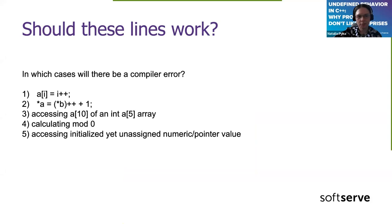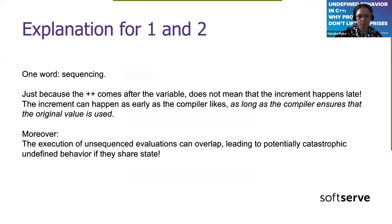Regarding the first two cases — using a variable as an index and then doing post-incrementation — they may seem like completely legit code. But it's connected with the term of sequencing, and it's absolutely up to the compiler and your optimization flags when it happens. Relying on accessing a variable and then changing its value at a time that's up to the compiler is asking for trouble.